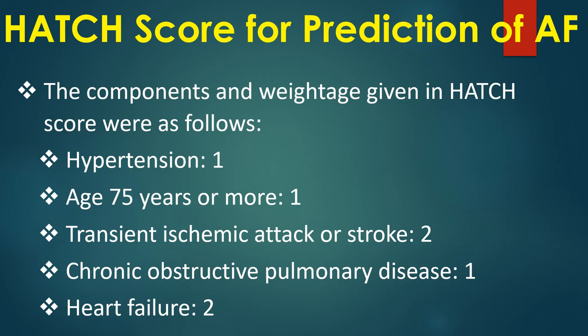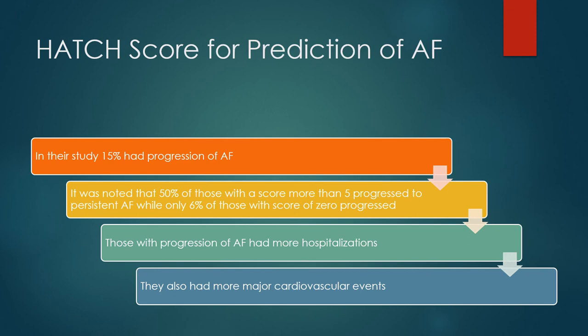The HATCH score components and points are: hypertension 1, age 75 years or more 1, transient ischemic attack or stroke 2, chronic obstructive pulmonary disease 1, and heart failure 2. In their study, 15% had progression of atrial fibrillation. It was noted that 50% of those with a score more than 5 progressed to persistent AF, while only 6% of those with a score of 0 progressed.